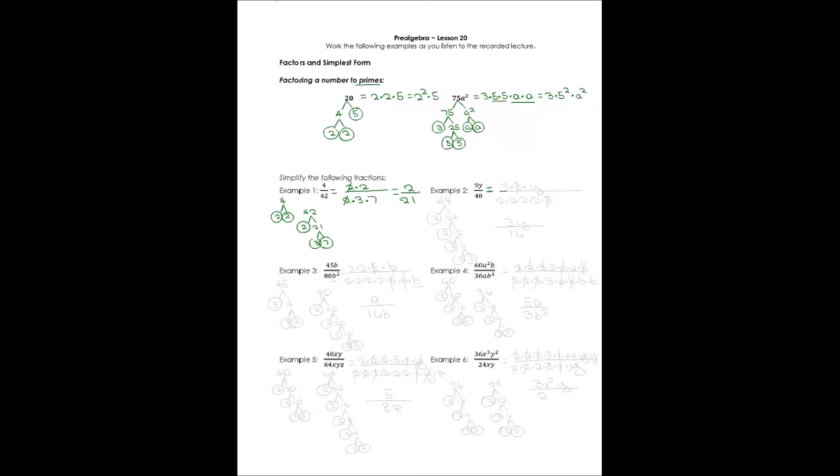Let's work on example 2. If you can see the prime factors, just go ahead and write them down. 9 factors into 3 times 3 times y — that's easy. Let's look at 48. I usually start, if it's an even number, with 2. So 2 times 24 gives me 48. 24 is even, so 2 times 12 gives me 24. 12 is even, so 2 times 6 gives me 12.